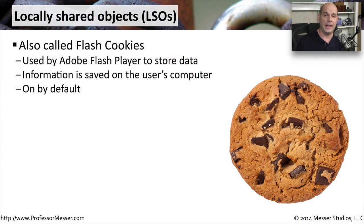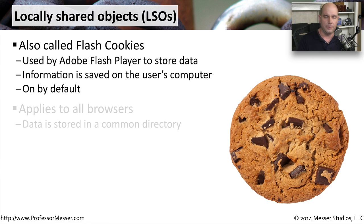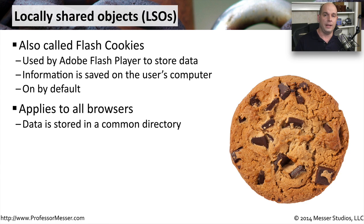If you're using Adobe Flash on your computer, you may have objects stored on your computer called locally shared objects, or LSOs. Locally shared objects are also referred to as Flash cookies. This is a place that the Flash player uses to store information on your computer. This is turned on by default, and it's very common for applications to store information that they might want to use for later. This is a stored area that applies to all the browsers you might be using and any time you would use the Flash player on your computer.